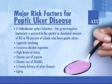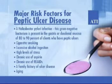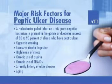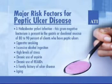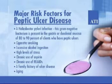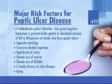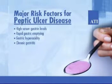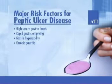The major risk factors for peptic ulcer disease are a Helicobacter pylori infection — this gram-negative bacterium is present in the gastric or duodenal mucosa of 80–90% of clients who have peptic ulcers — cigarette smoking, excessive alcohol ingestion, high levels of stress, chronic use of aspirin, chronic use of NSAIDs, a family history of ulcer disease, aging, high serum gastrin levels, rapid gastric emptying, gastric hyperacidity, and chronic gastritis.